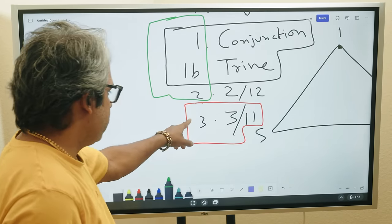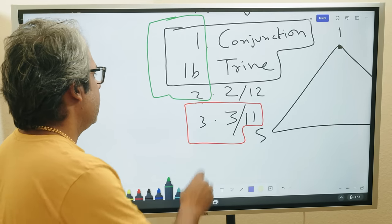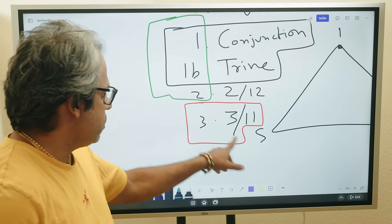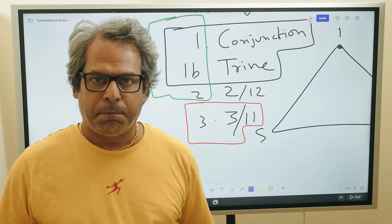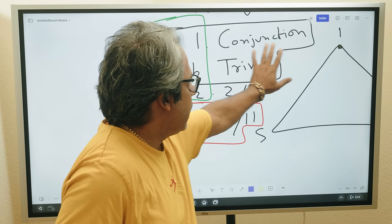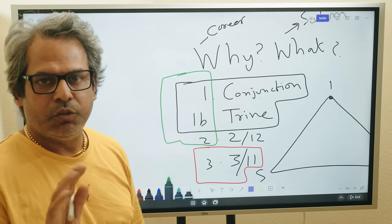If you cannot find anything with combination 1, 1B and 2-12, then you move to 3-11. If you have found your combination with conjunction, trine and 2-12, no need to go for 3-11. That is it. You stop right there and you say something as to why and what.